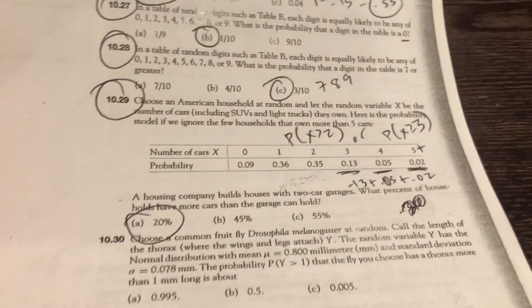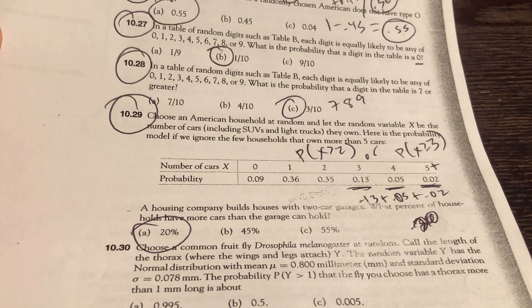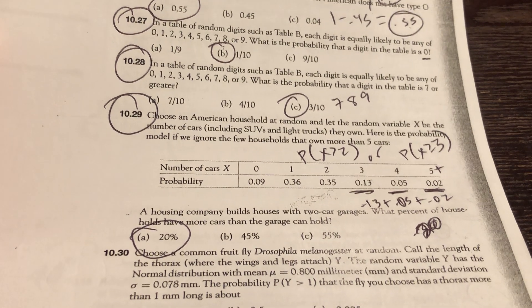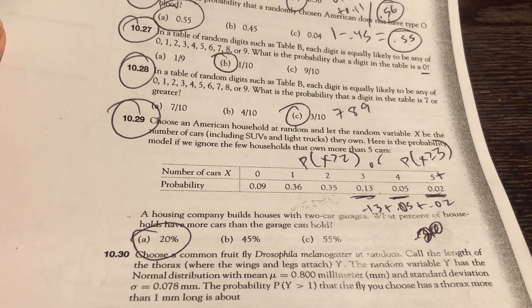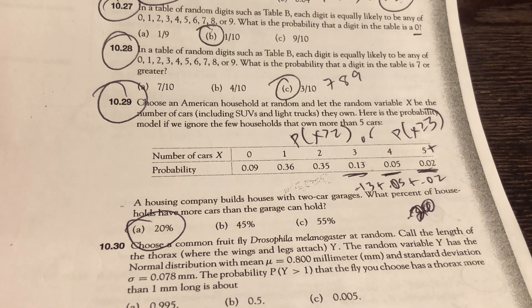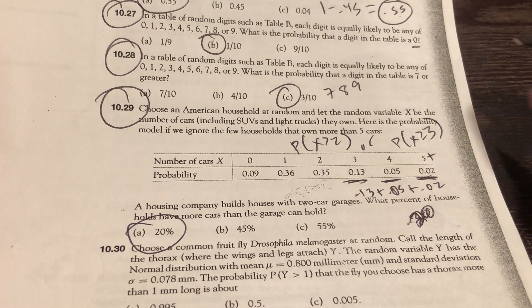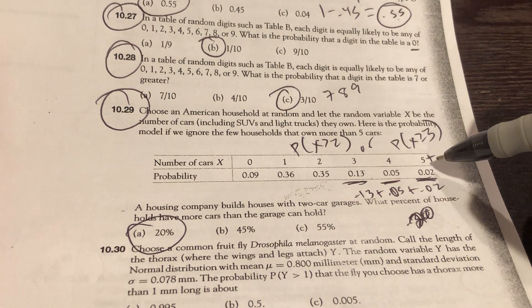Choose an American household at random. Let X be the number of cars they have, including SUVs and light trucks. Not toy trucks. Not toy cars. I guess even those smart cars count. Here's the probability model. If we ignore the few households that own 5 or more, so we're going to call this 5+.